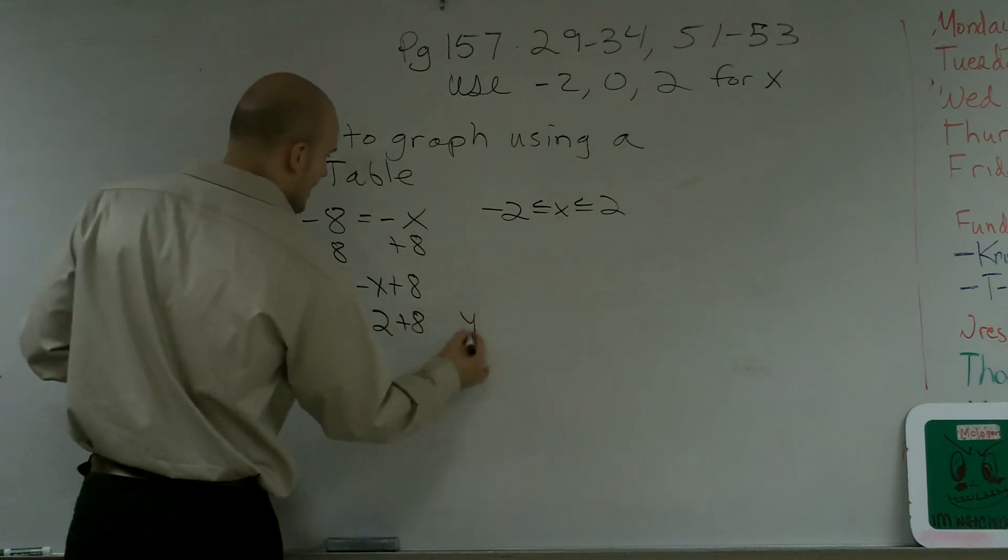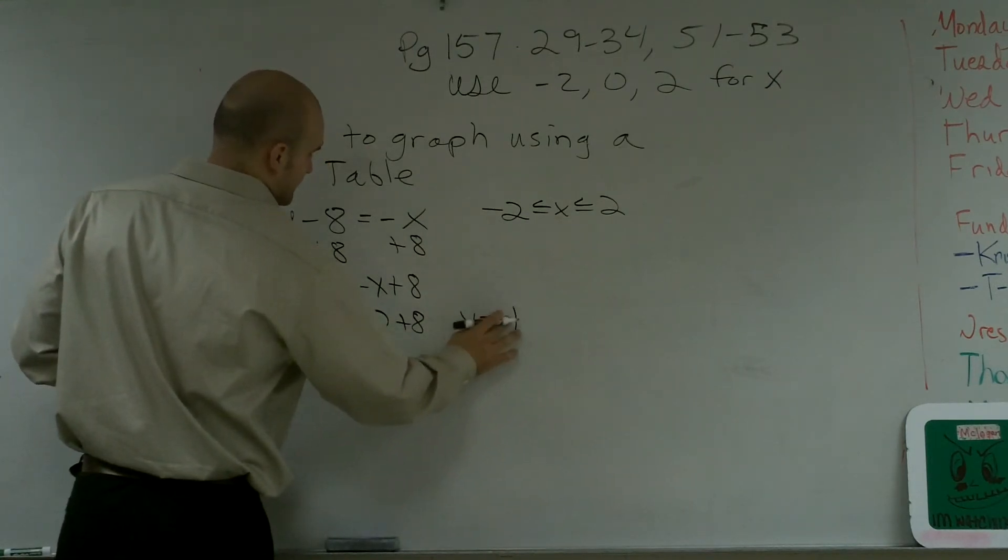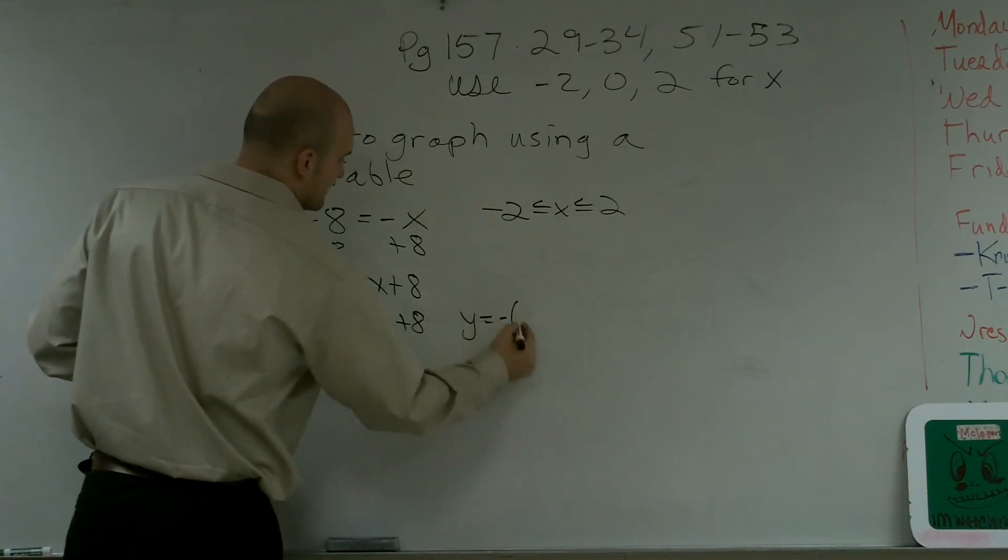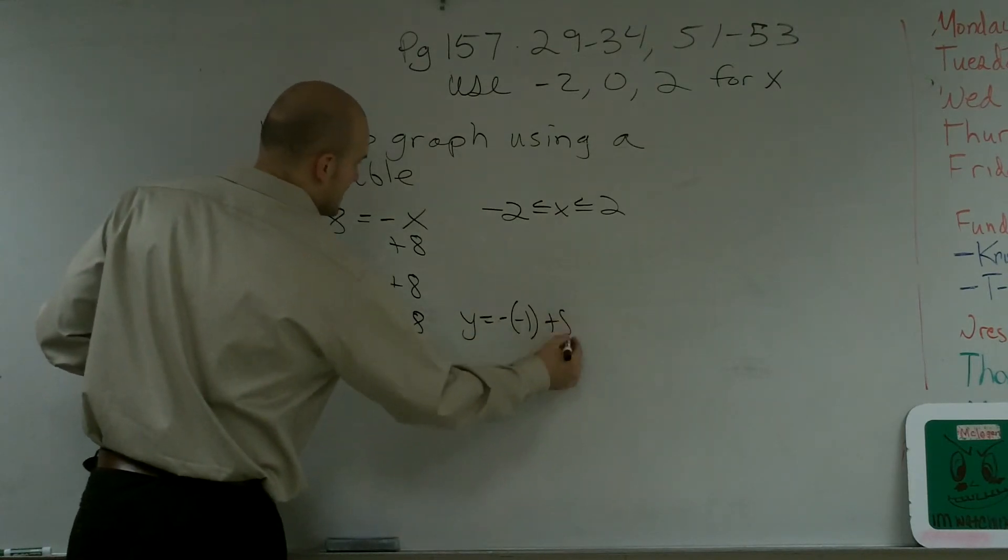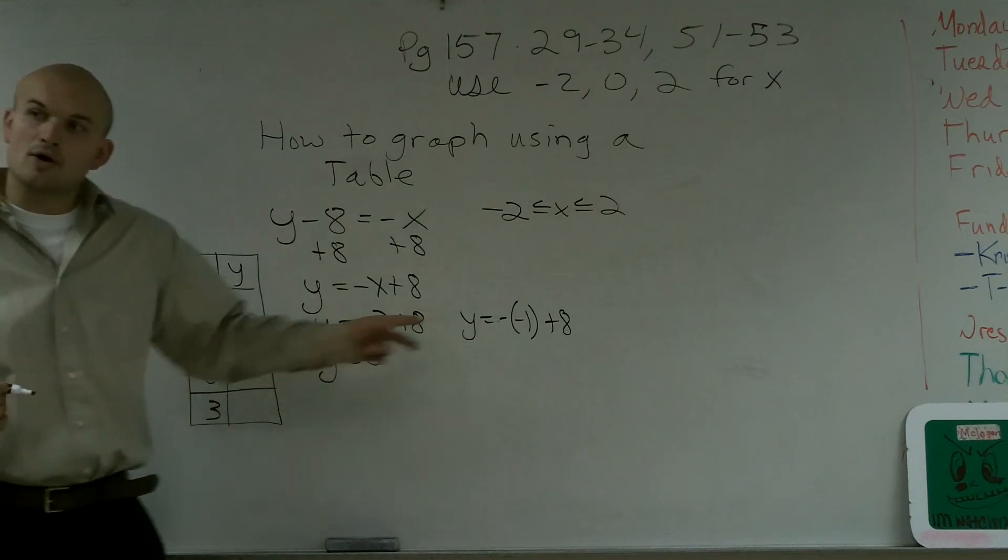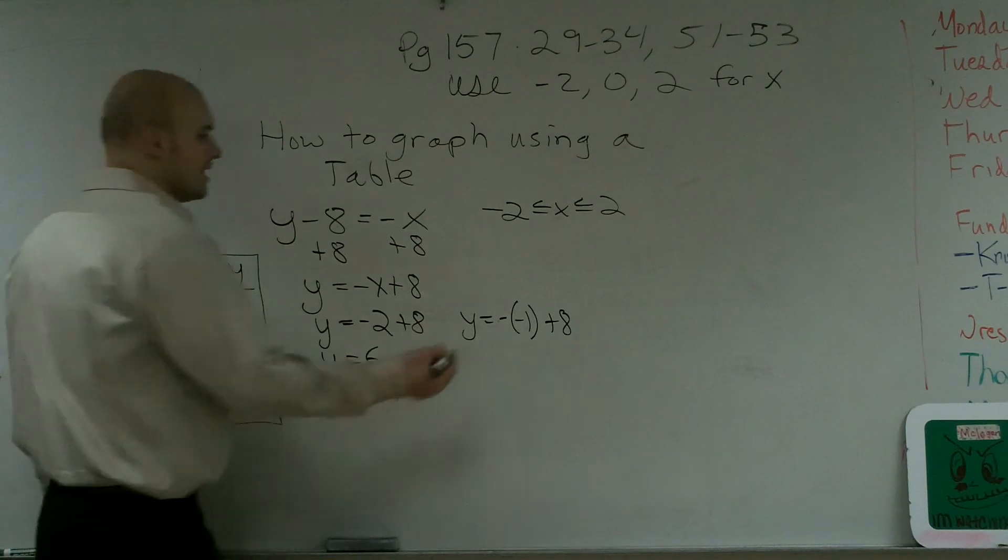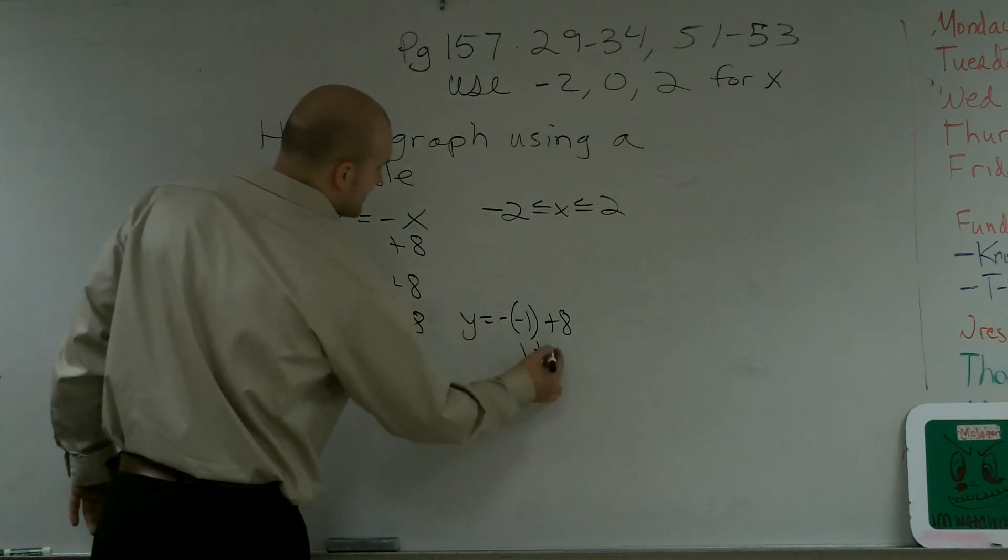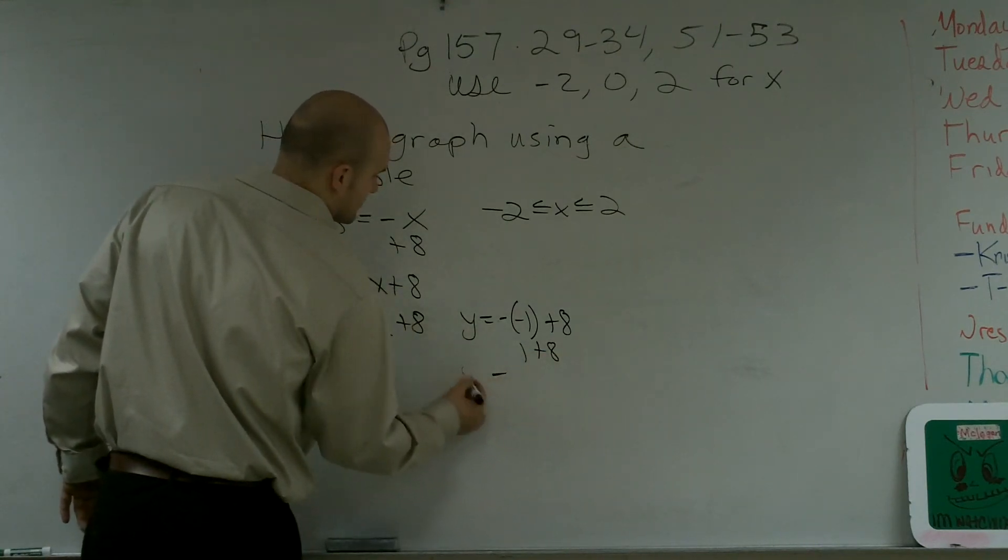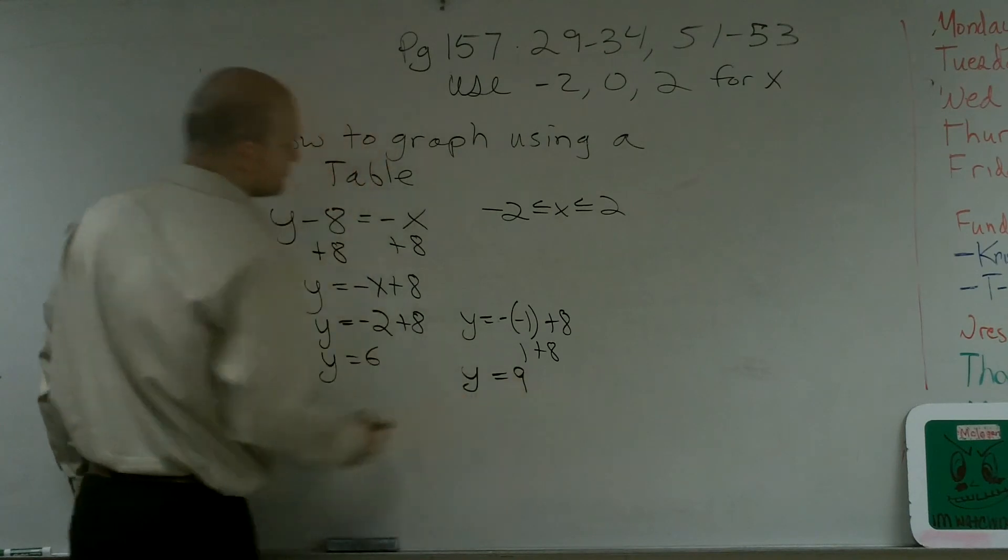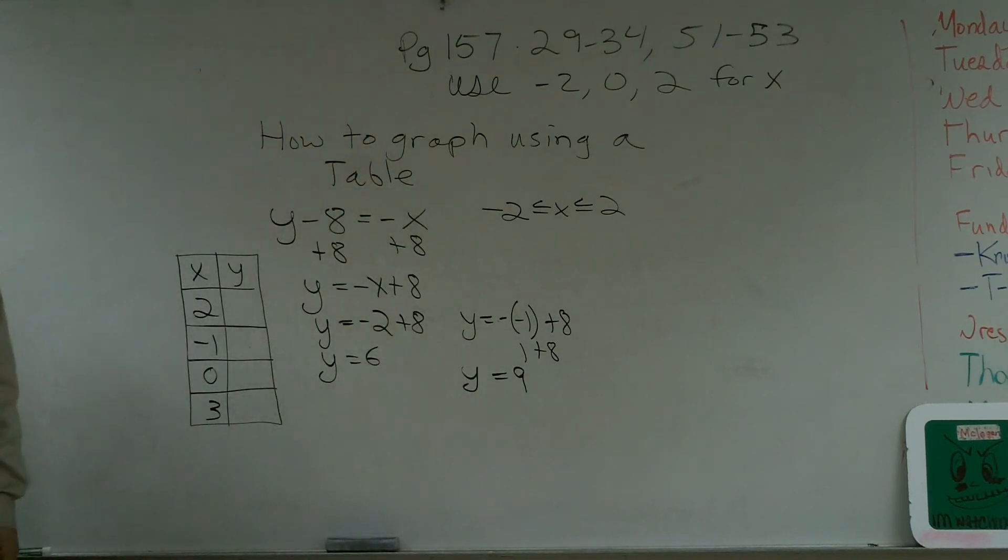Then I do another one. y equals negative 1. Sorry, that's already negative x. Negative, negative 1 plus 8. Notice, I'm already, it's a negative x and I put in a negative 1. Therefore, the two negative signs are going to cancel out. So I'll be left with 1 plus 8.